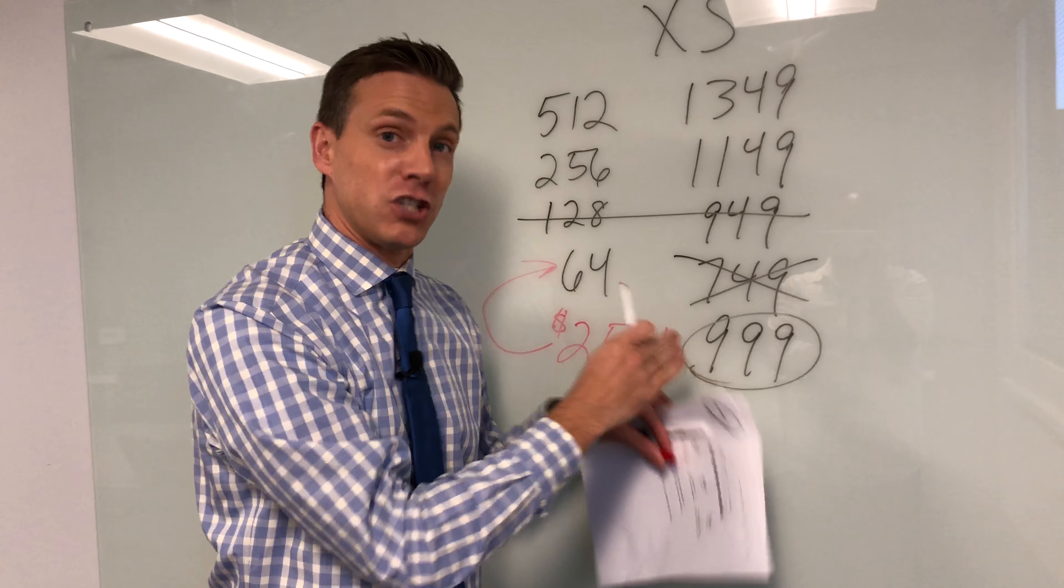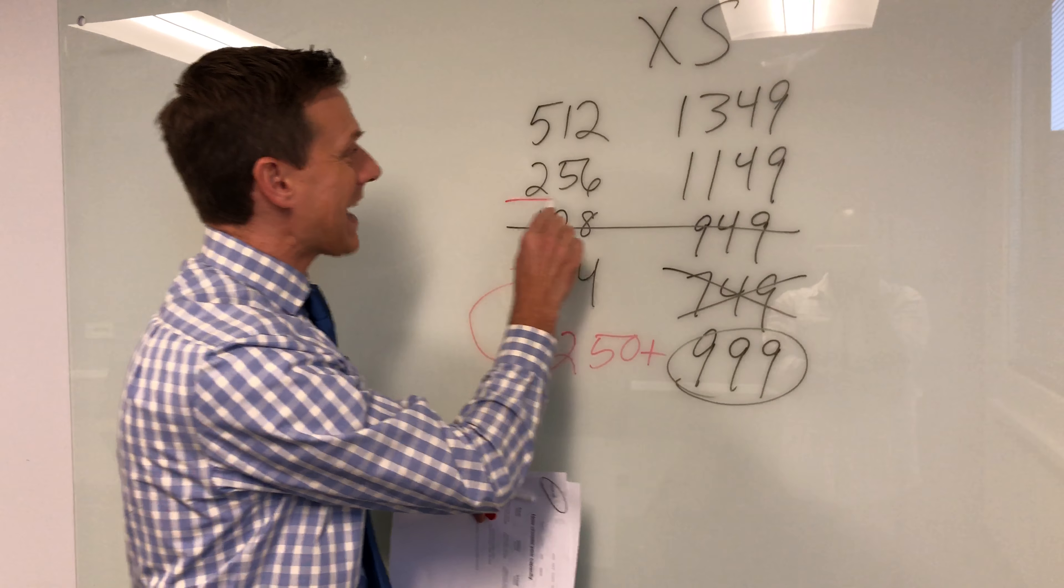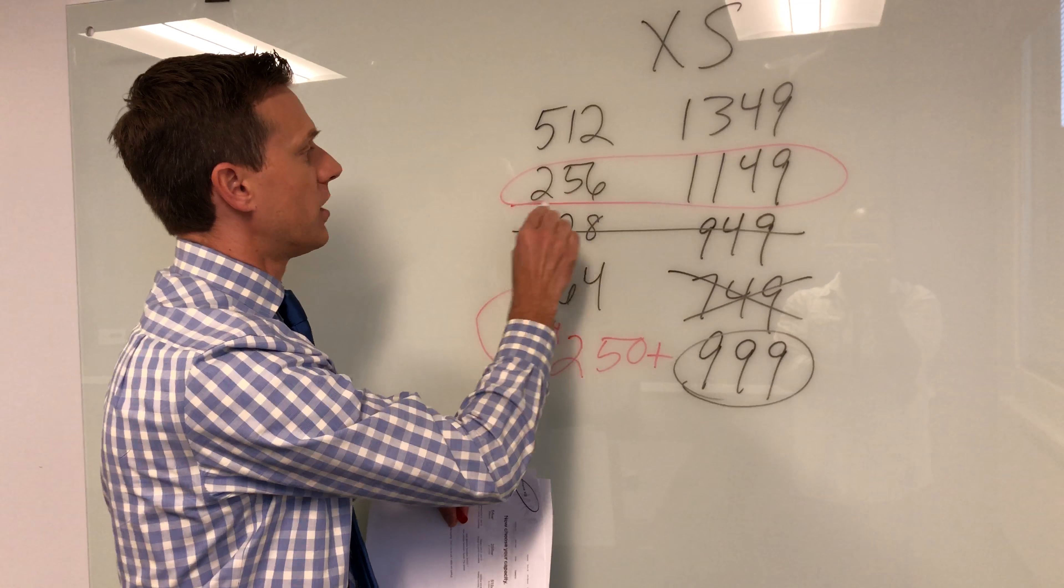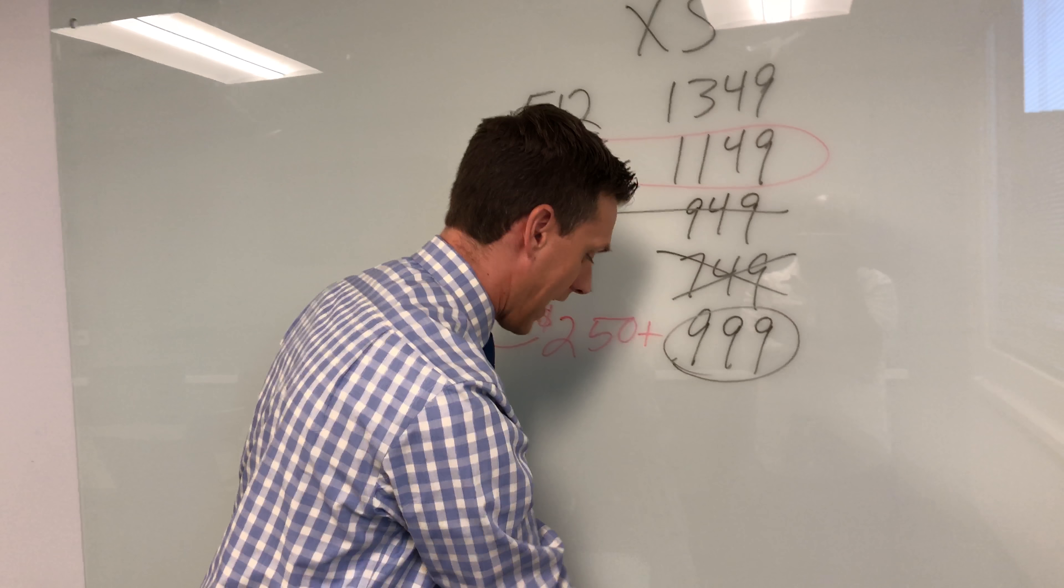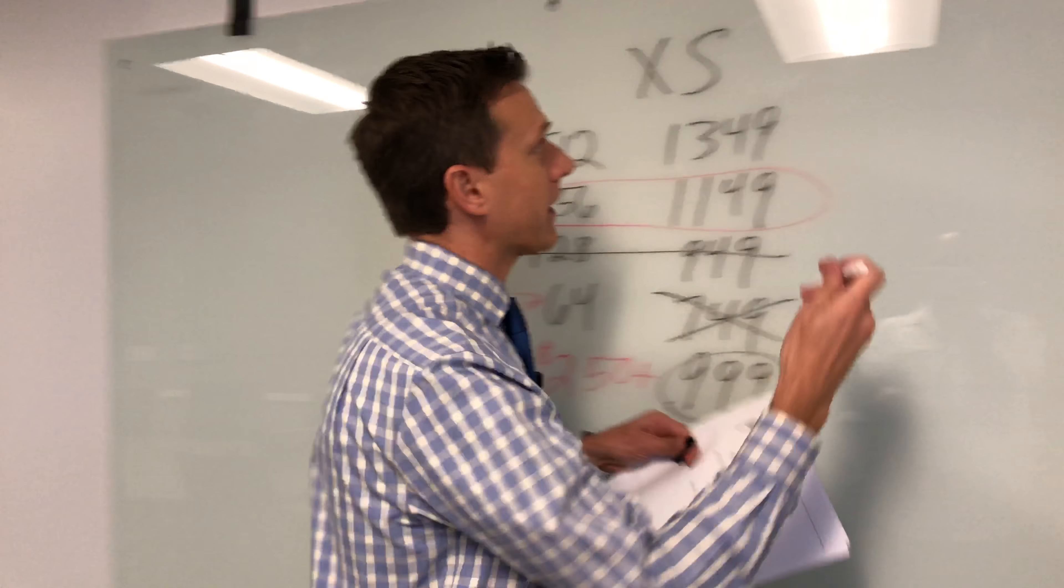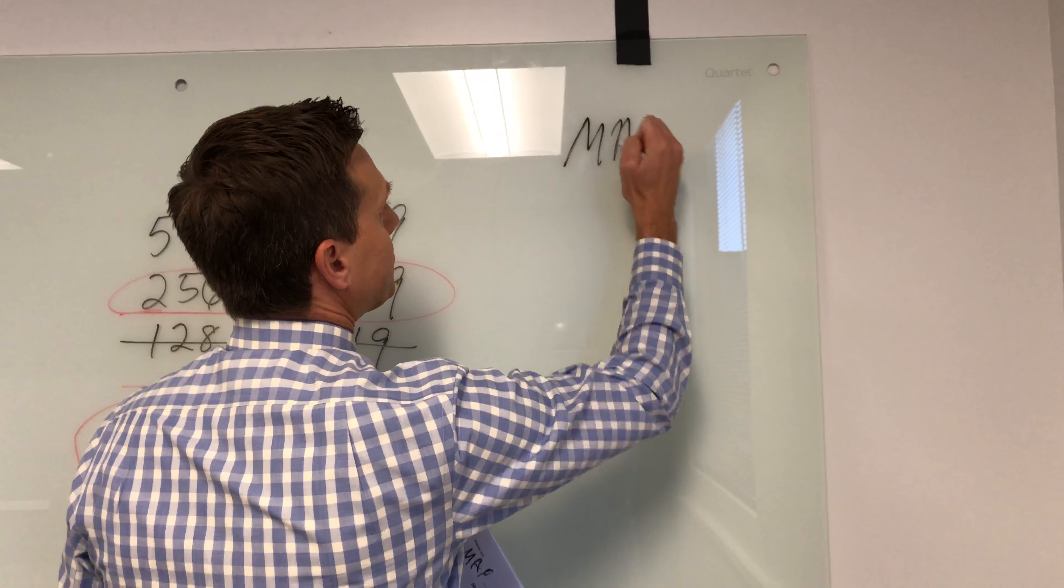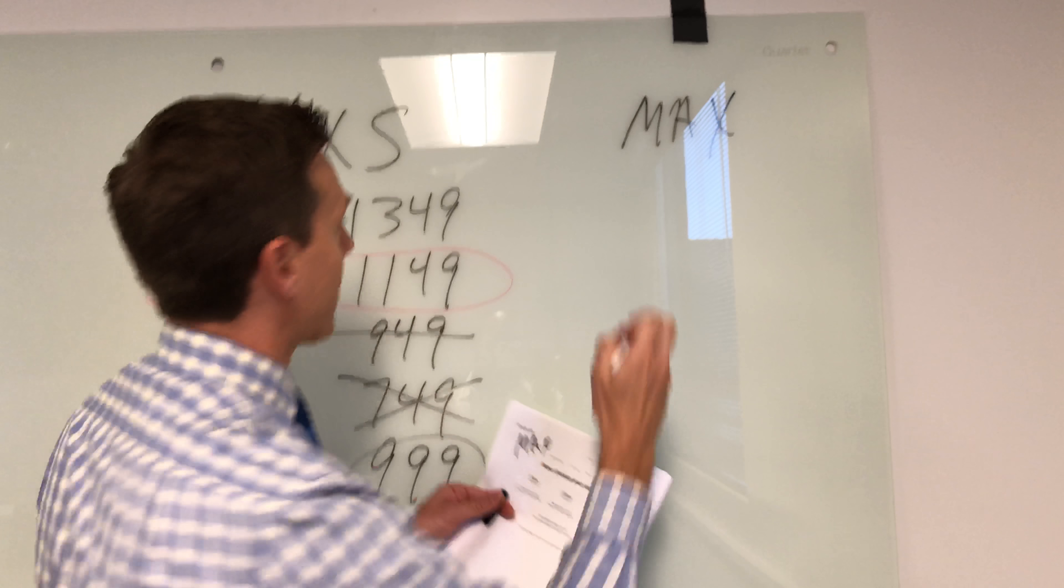So while it seems like that might be the cheapest phone to go with, this is actually a much better value for your money. Now let's see how that same exact math works for the iPhone XS Max. So let's go with the Max, and we'll just do the same exact pattern.